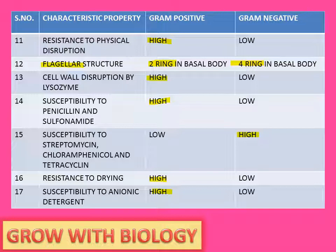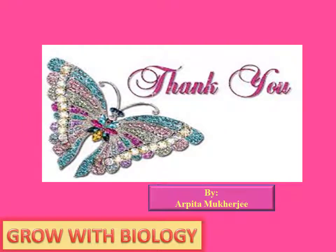Susceptibility to streptomycin, chloramphenicol, and tetracycline is high in gram negative. Resistance to drying is high in gram positive, whereas susceptibility to anionic detergent is high in gram positive. These are the major differences between gram positive and gram negative. Thank you.